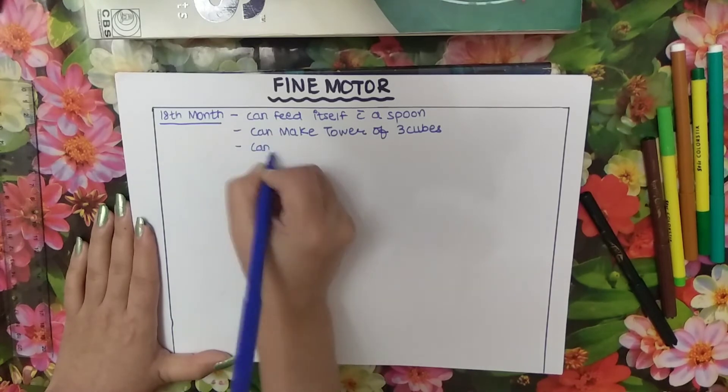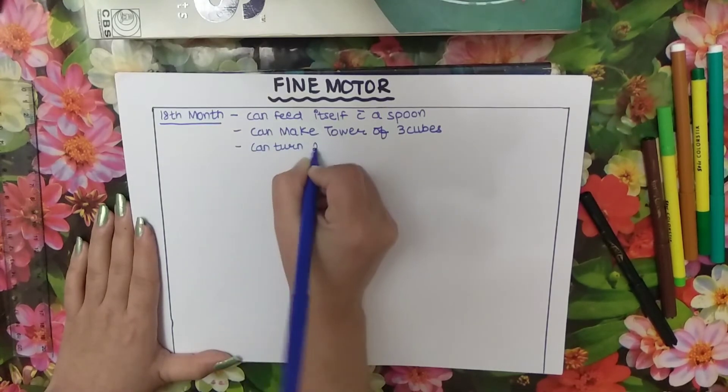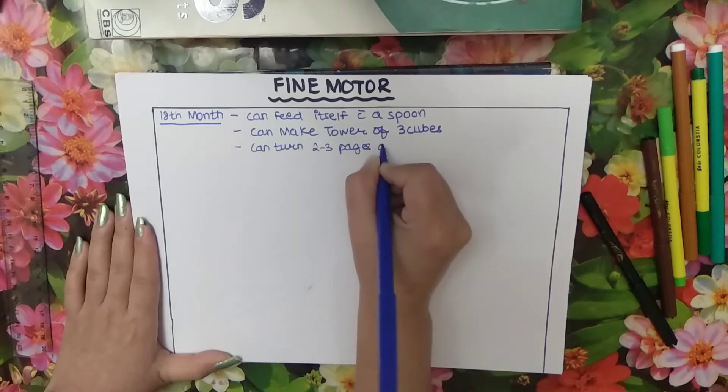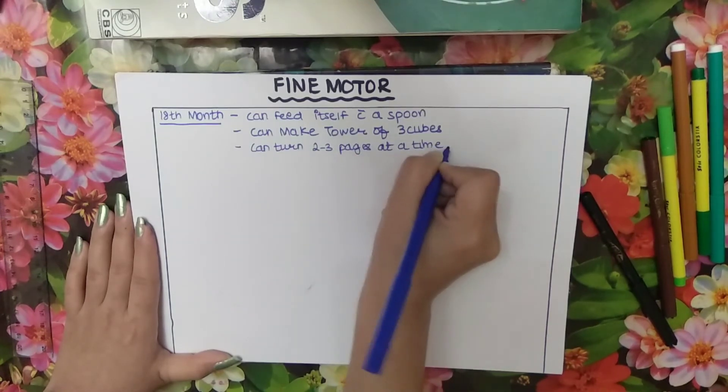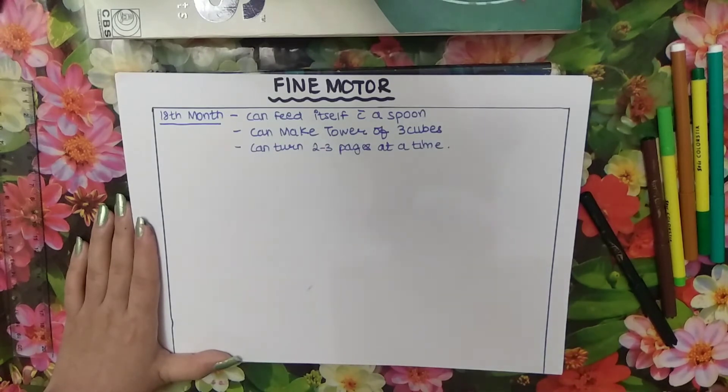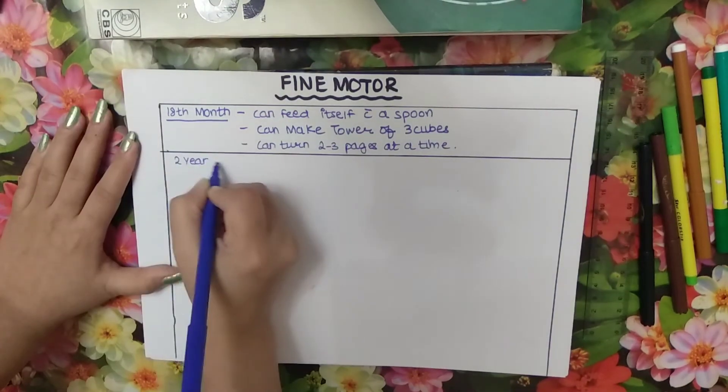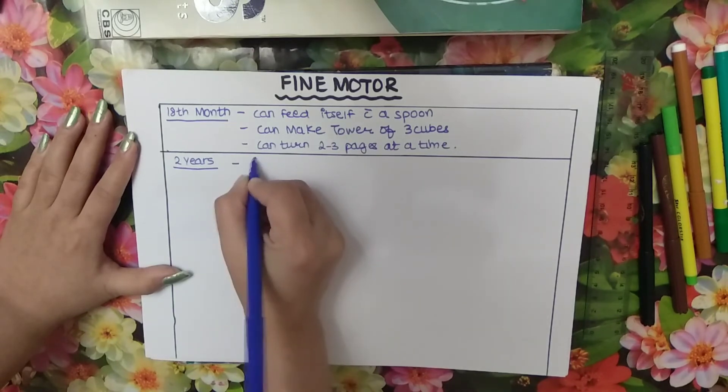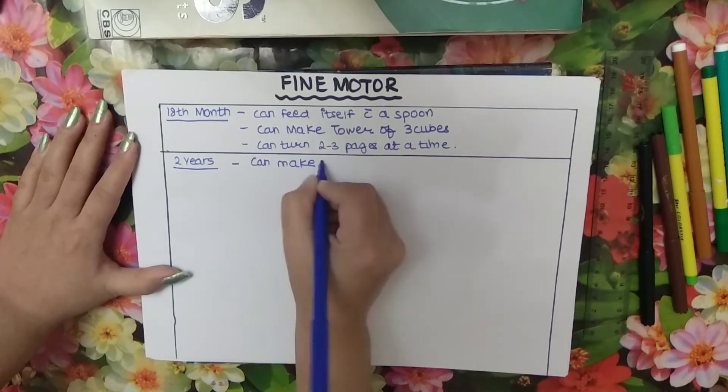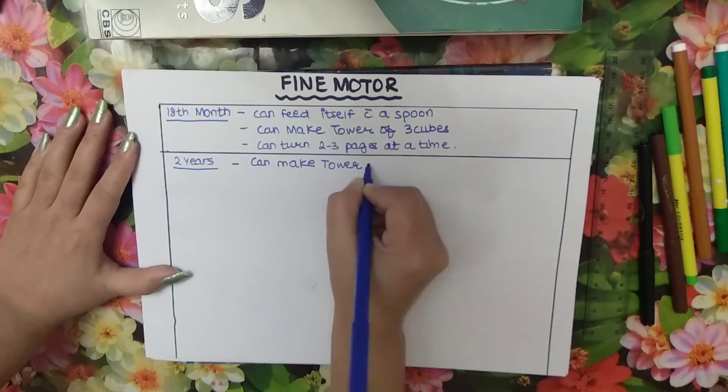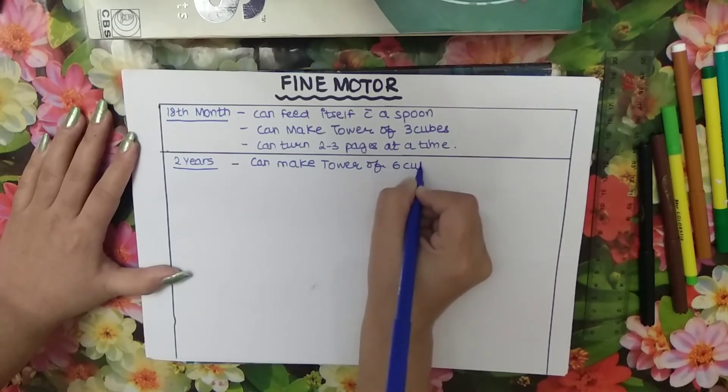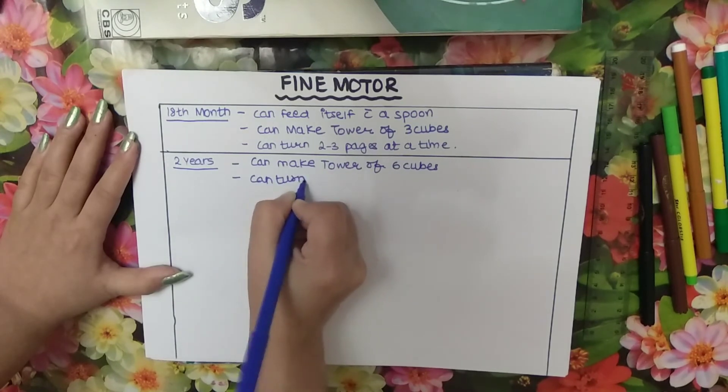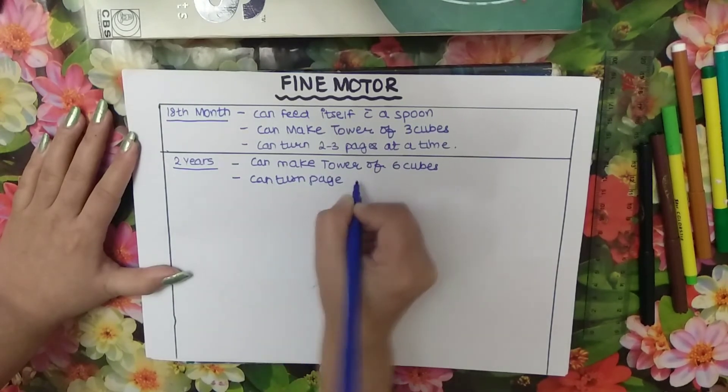Baby can turn two to three pages of a book at a time. Two year baby can make tower of six cubes, can turn page singly.